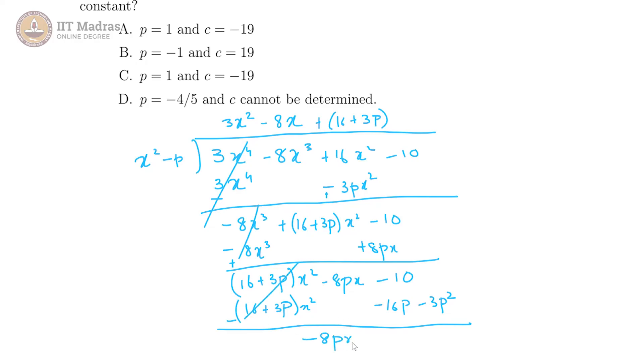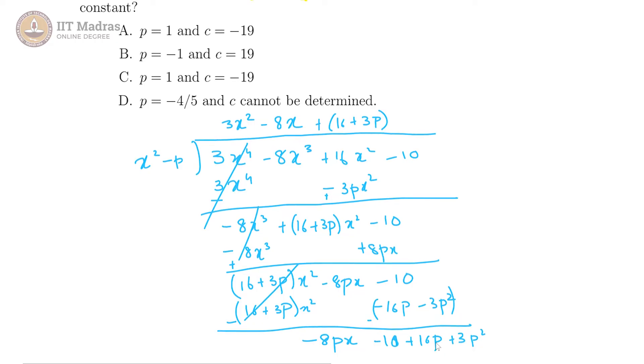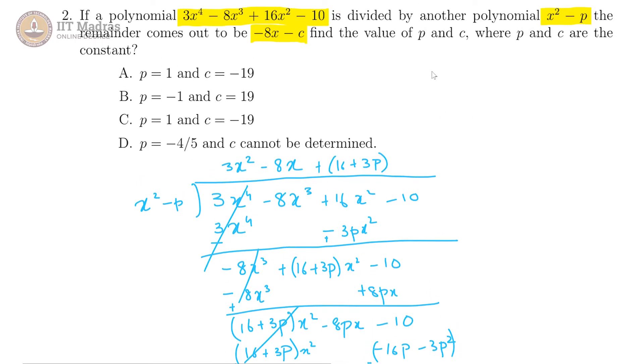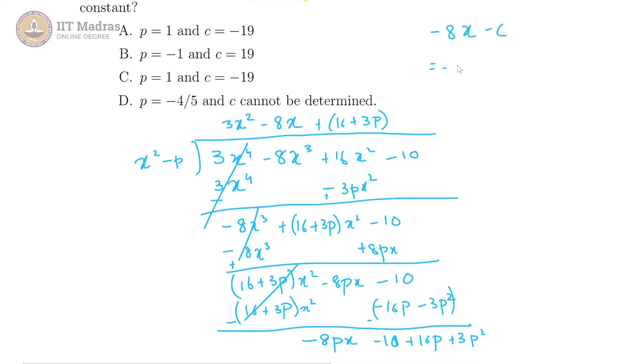We are left with minus 8px minus 10 plus 16p plus 3p square, because this is being subtracted. So they are saying this remainder is minus 8x minus c, and that is equal to minus 8px minus 10 plus 16p plus 3p square.